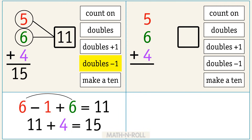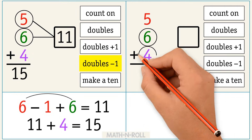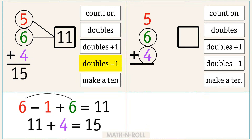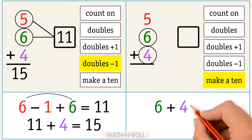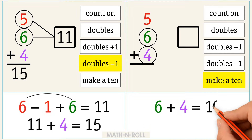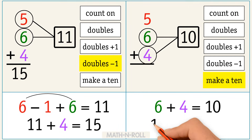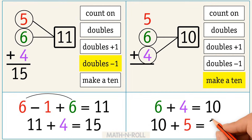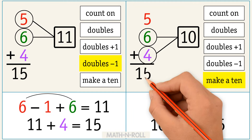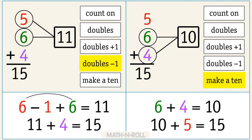5 plus 6 plus 4 equals 15. Let's do the same problem using a different strategy. Circle 6 and 4. This time use the make a 10 strategy. We add 6 plus 4 to make 10. Then we add 5 to 10 to get 15. So 5 plus 6 plus 4 equals 15. We used different strategies but the sum stayed the same.